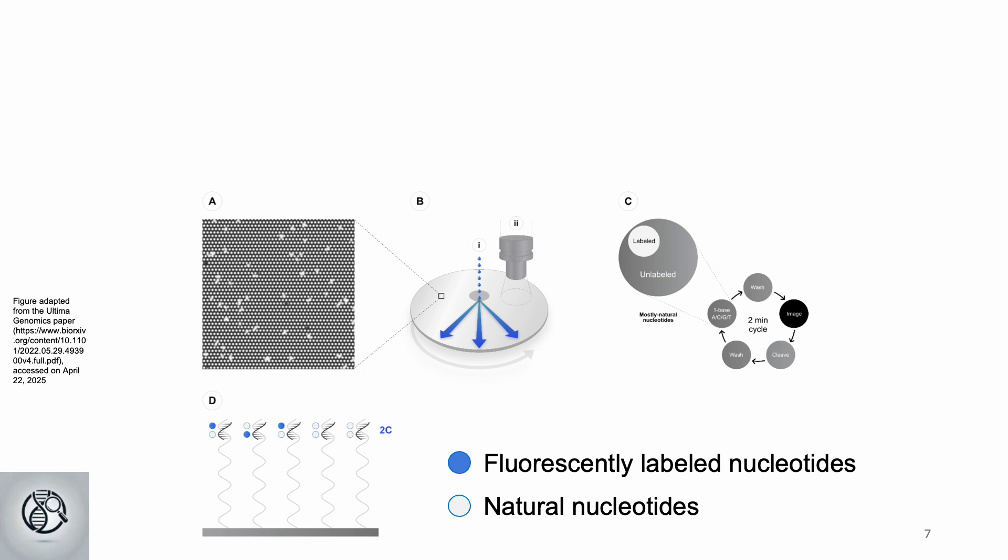Let's look at Ultima's sequencing in action. This zoomed-in image shows an amplified bead on the wafer. The first two bases are cytosines, with both labeled and natural nucleotides incorporated.